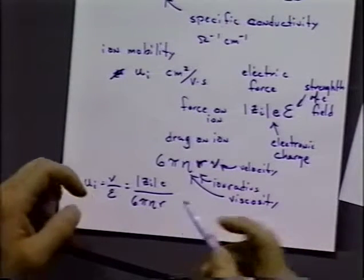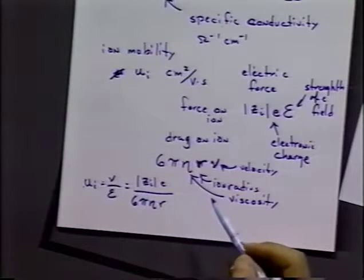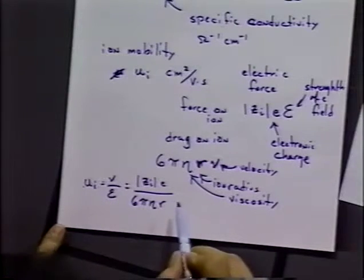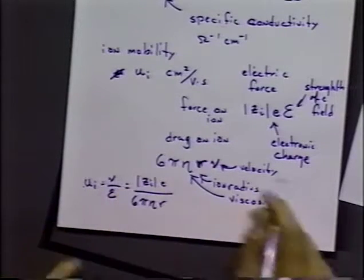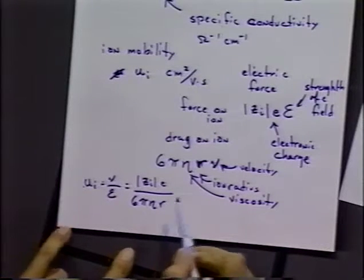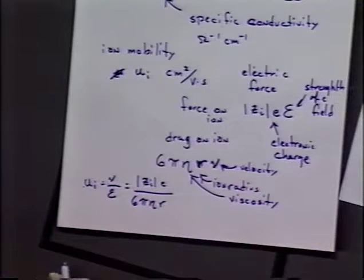So for a simple derivation, we can come up with the mobility of an ion would be the velocity over the electric field. And that would be equal to the charge on the ion times the electronic charge over 6πηr. So as we'd expect, the higher the electric field, the higher the velocity is. But then we have the effect: the smaller the radius, the higher the velocity, the mobility; the higher the charge, the higher the mobility of our ion solution.